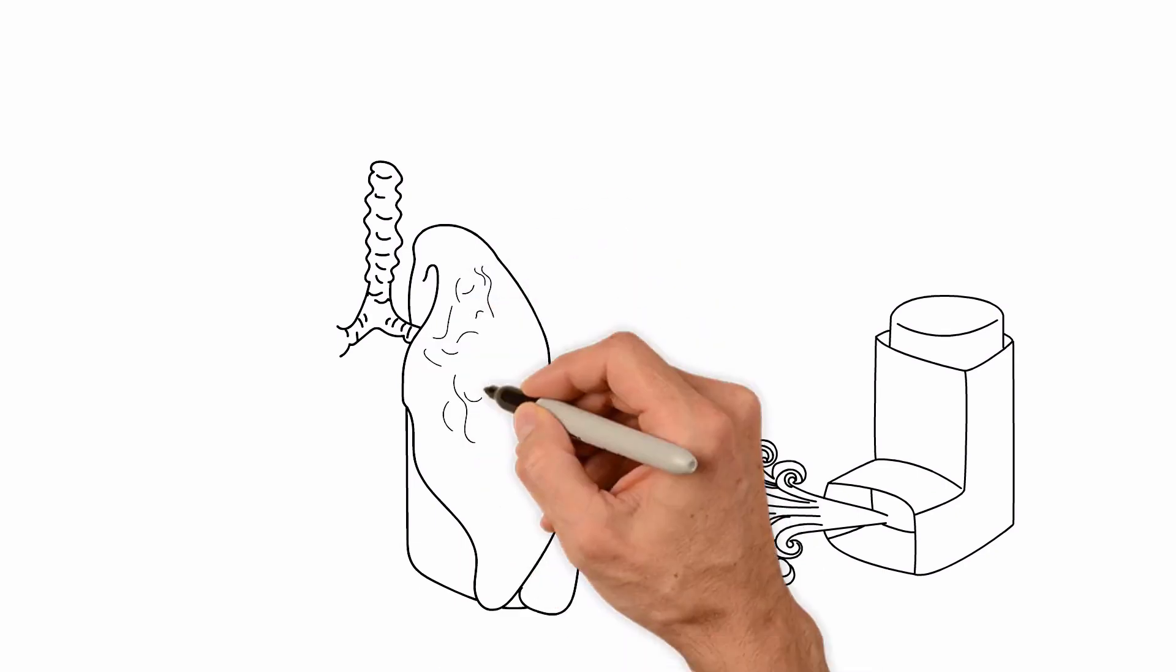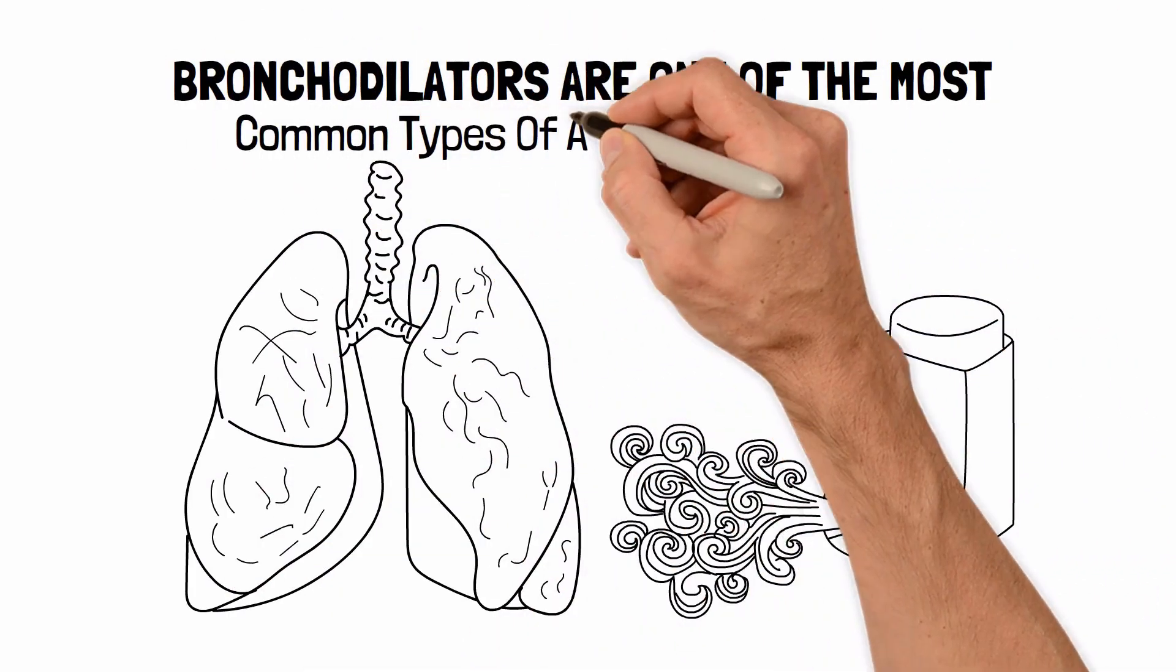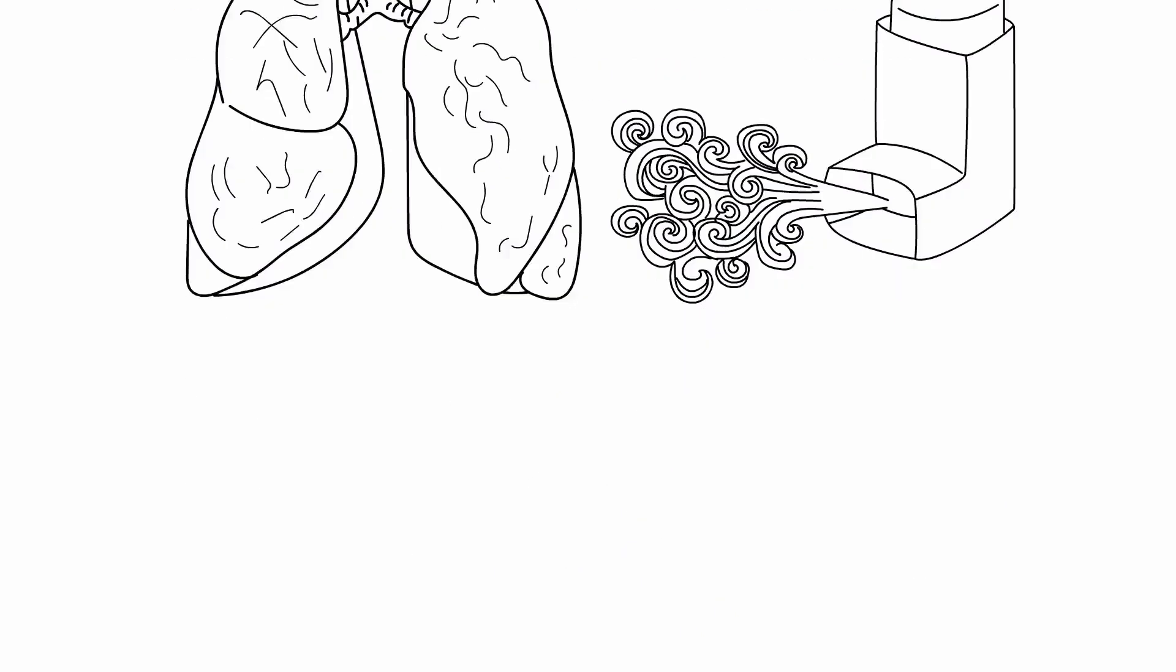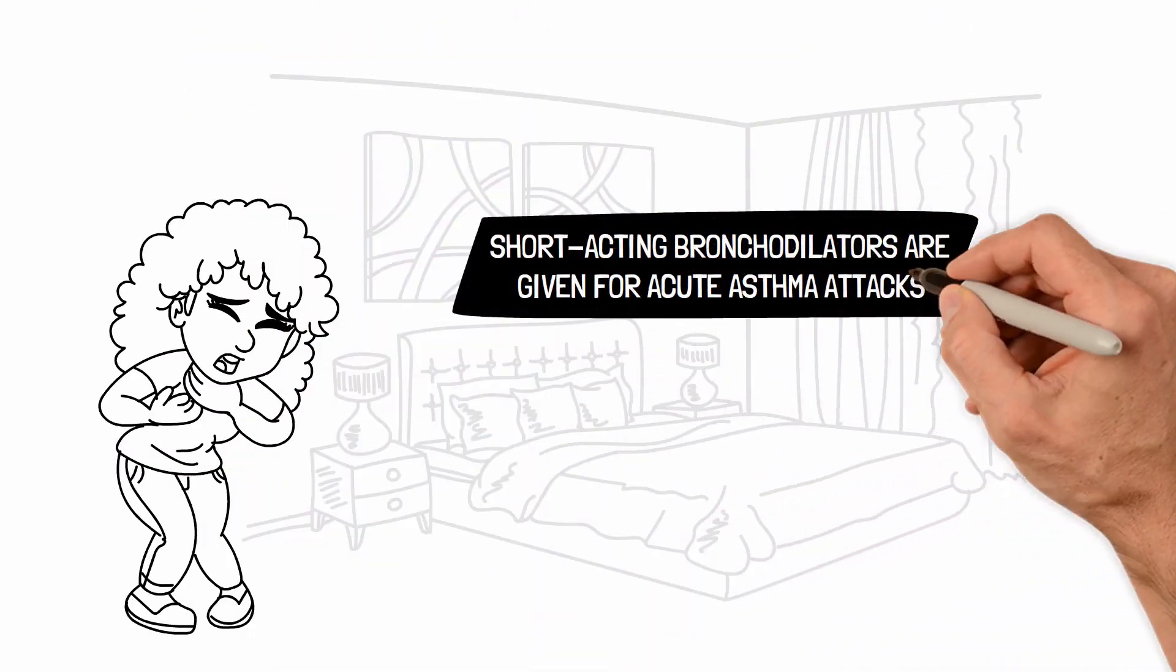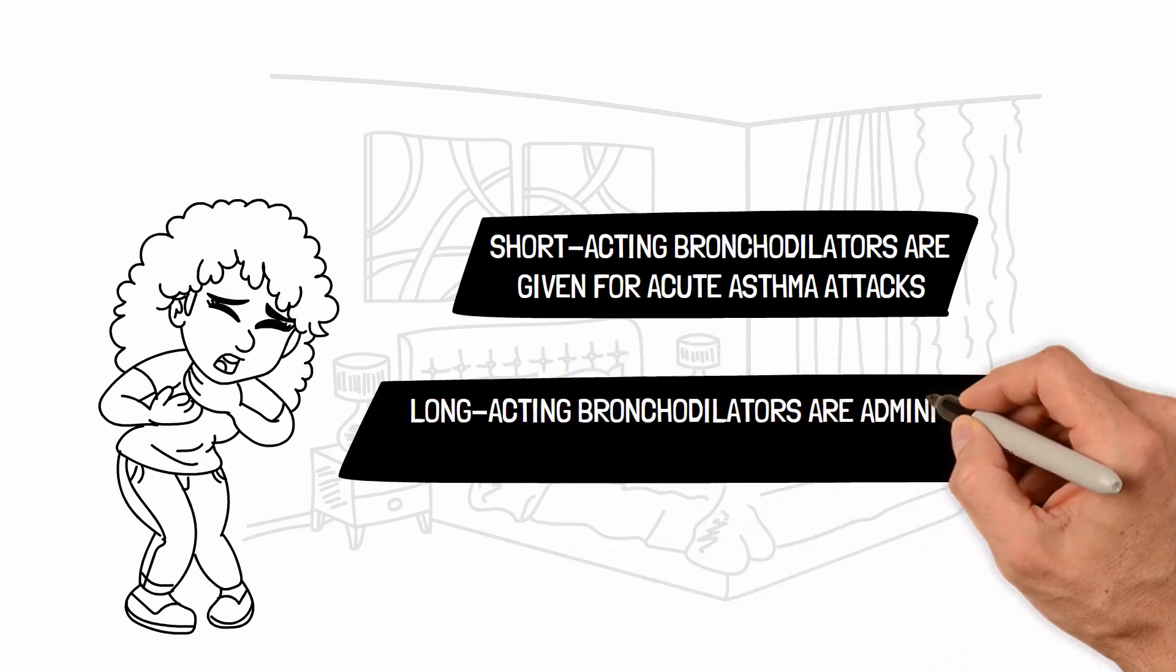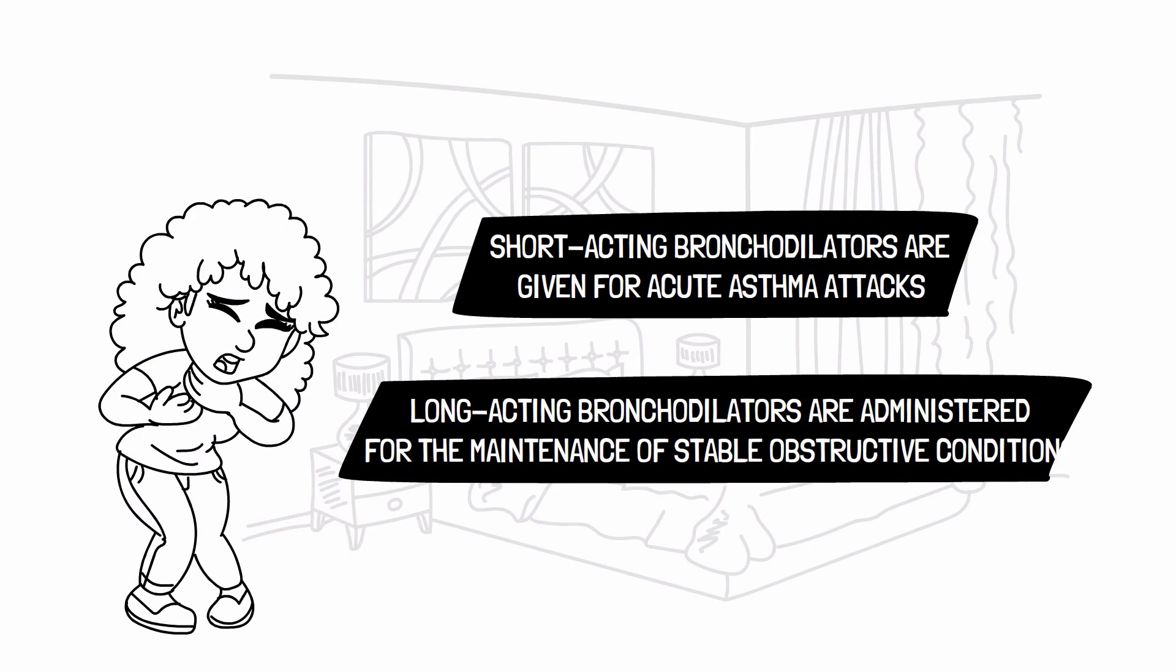Bronchodilators are one of the most common types of aerosol medications, and they're indicated to help open up the lungs. Short-acting bronchodilators are given for acute asthma attacks, while long-acting bronchodilators are administered for the maintenance of stable obstructive conditions, such as COPD.